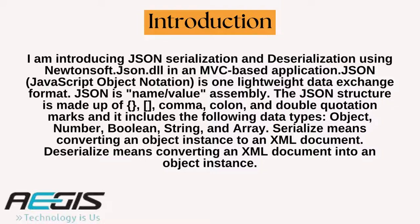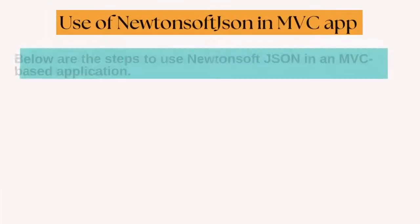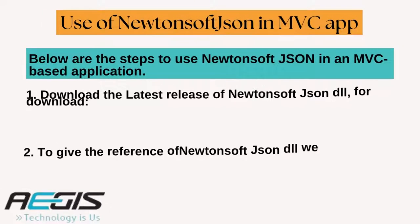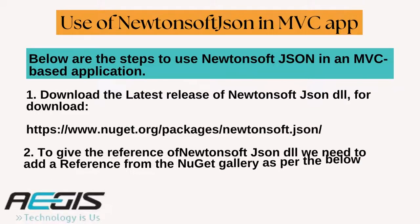Serialize means converting an object instance to a JSON document. Deserialize means converting a JSON document into an object instance. Next, understand the use of Newtonsoft.JSON in the MVC app.